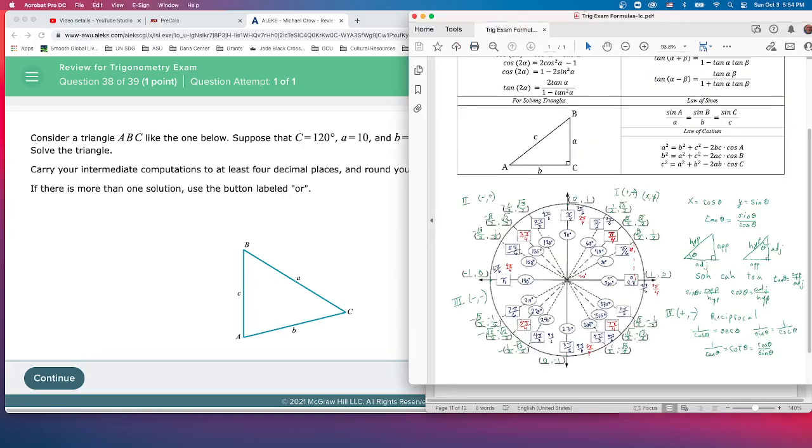And where does that come from? That's one of our formulas from our sheet. The law of cosines: c squared equals a squared plus b squared minus 2ab times the cosine of angle C, and then we just take the square root of that to get side c.